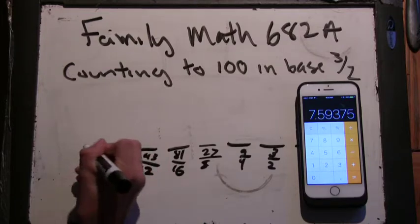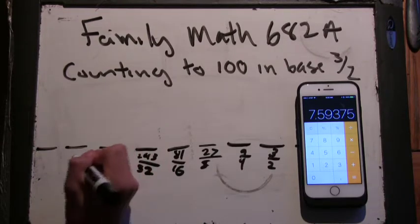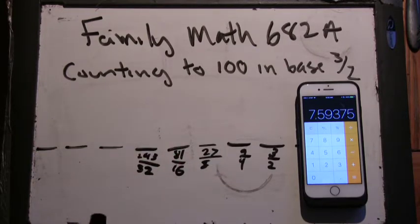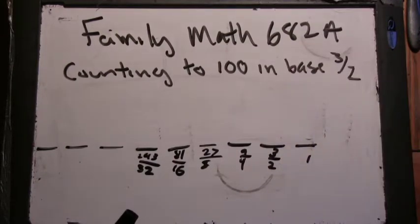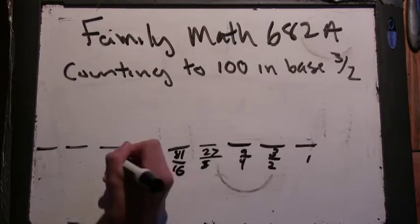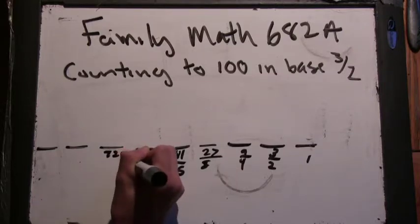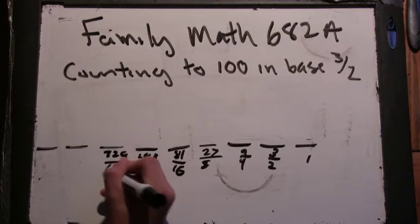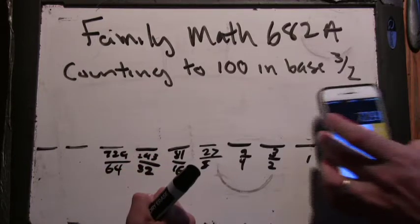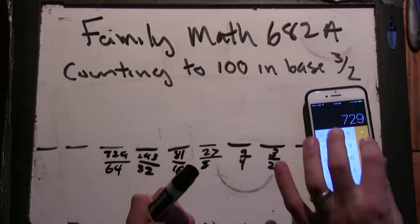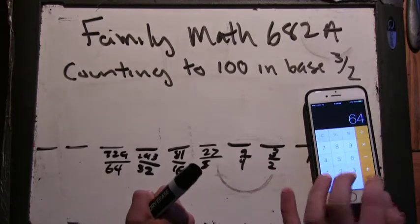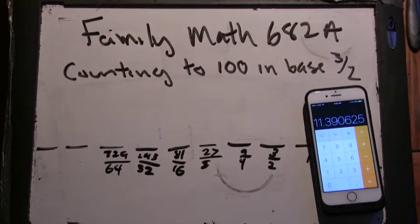So we need to get to a little less than 50 with this. The next one, 729 divided by 64. So 11. It seems like it's climbing. Yeah.